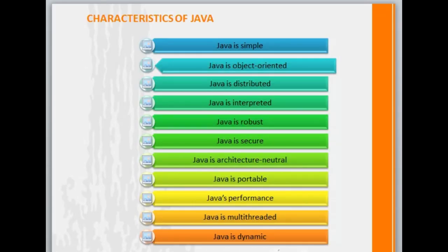Next we will talk about the characteristics of Java. Java is a very simple language. It is object oriented, which means it includes the concept of object oriented programming in which every program module is divided into small modules which are known as objects. Java is also a distributed language which can be distributed across multiple platforms.